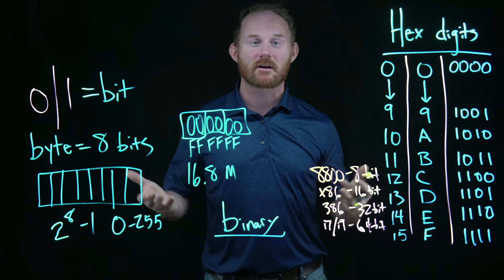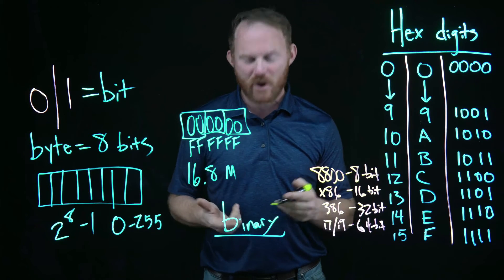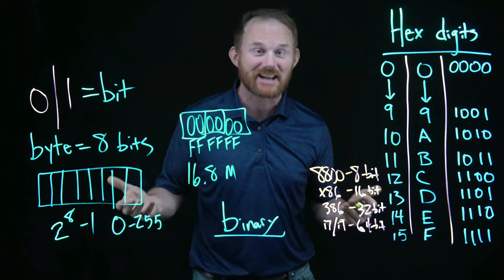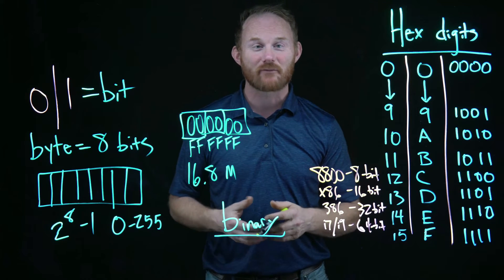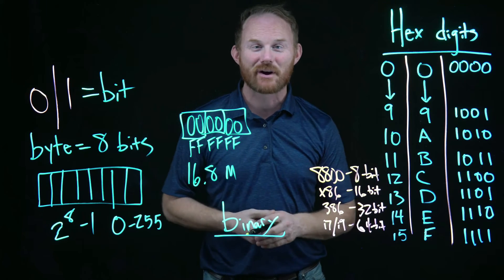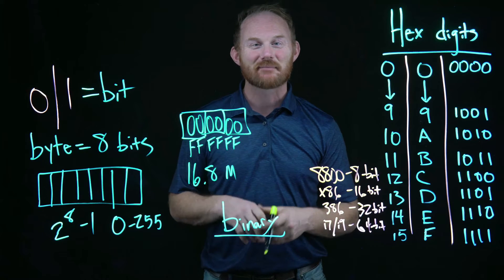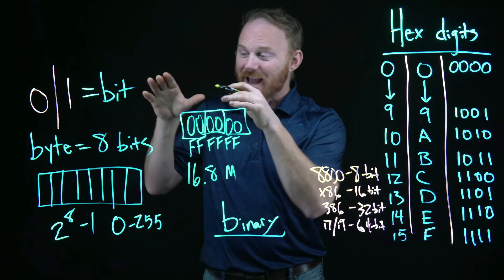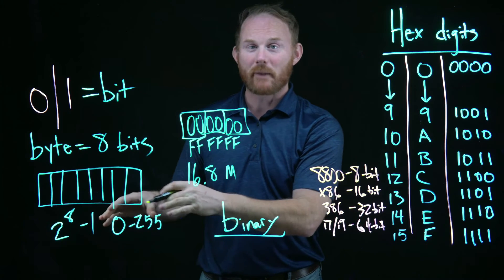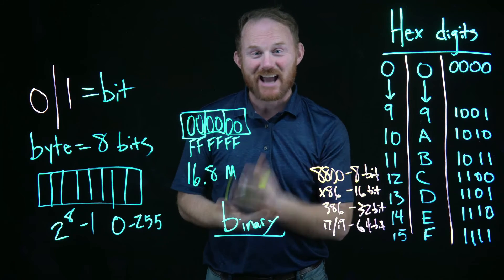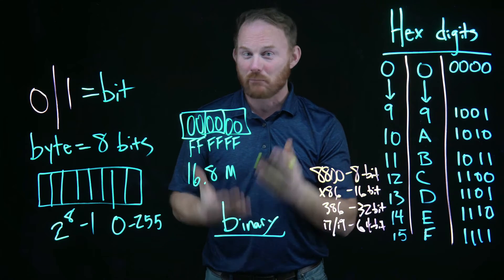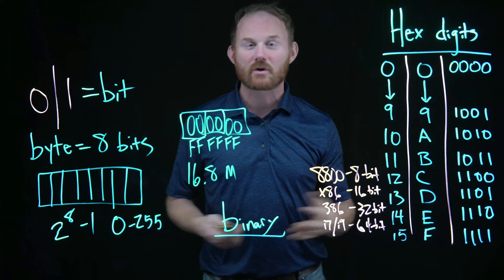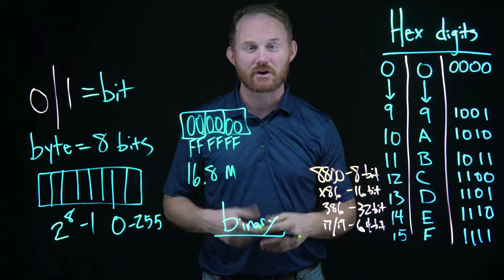Eight is also the building block for our storage system. We don't refer to how many bits are in a hard drive — you say you have a one terabyte hard drive. We're up to petabytes, and pretty soon exabytes. Eight bits makes one byte, and one byte is the cornerstone, the building block behind almost all computer storage architecture.